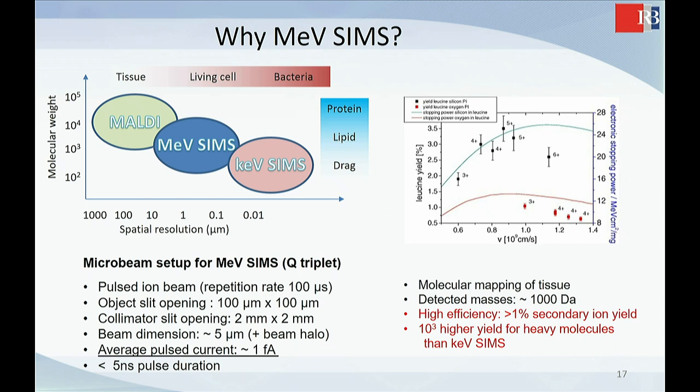But this is destructive technique. And this is also destructive. Only this one is almost not destructive because the ions are very, very rare. And another point is that the efficiency is very high for MeV ions. So molecular yield for this leucine molecule is about 1%, which means that you need 100 ions to get one ion out.